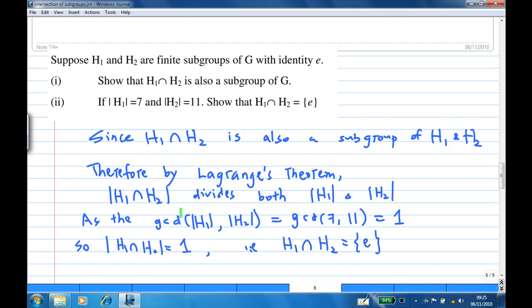But the greatest common divisor of order of H1 and order of H2 is the greatest common divisor of 7 and 11, which is 1. So, the order of H1 intersect H2 is 1.